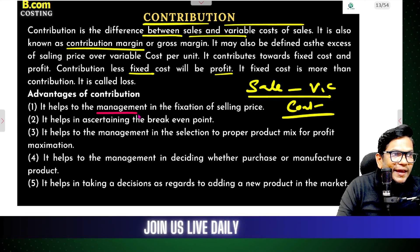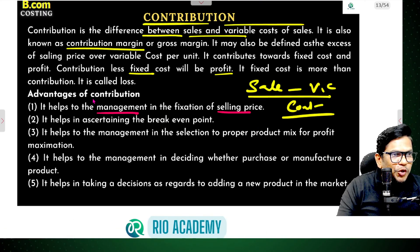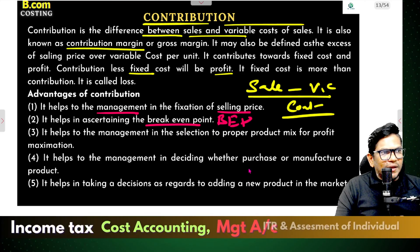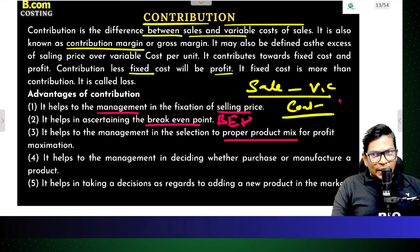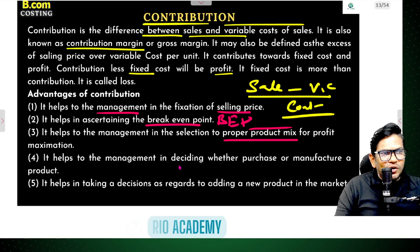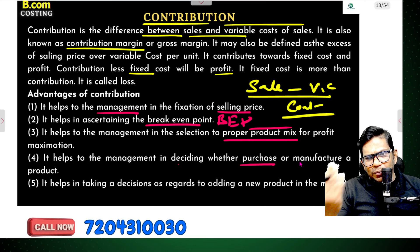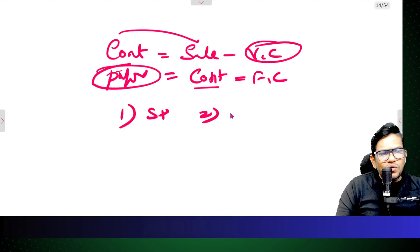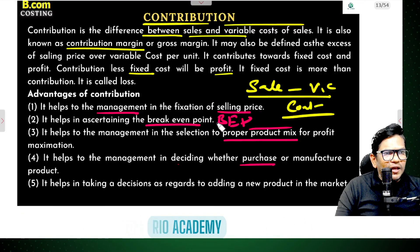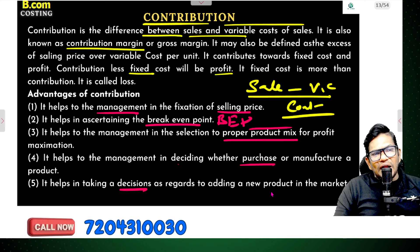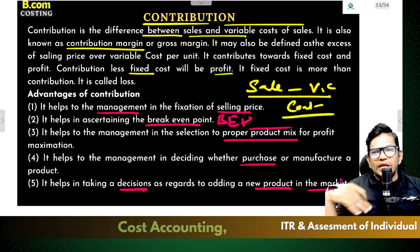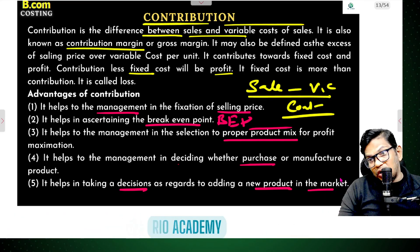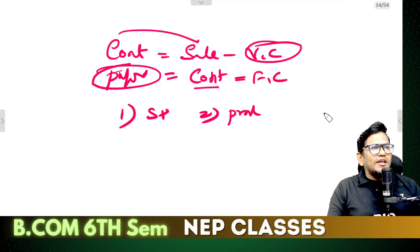Contribution helps in fixing the price. It helps find the break-even point - whether profit or loss at a given point. It helps management to select the proper product mix. It helps management in deciding whether to purchase or manufacture. Contribution helps in determining the selling price, whether to produce in-house or buy a ready product, and aids in market entry decisions.